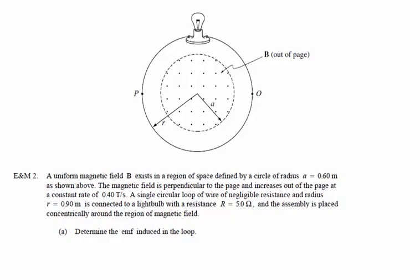This AP free response problem deals with using Faraday's law to calculate the voltage induced in a loop of wire where there's a changing magnetic field.